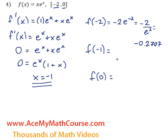What about f of negative 1? That would be negative 1 e to the power of negative 1, or negative 1 over e, which is approximately equal to negative 0.3679. And f of zero is just going to be zero times e to the power of zero, which is zero.